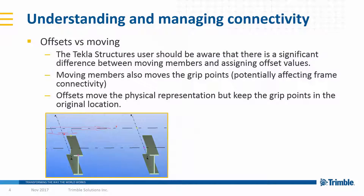When generating an analytically connected model, the Tekla Structures user should be aware of the significant difference between physically moving members to obtain the correct physical location versus assigning an offset value to obtain the correct position. Moving members also moves the grip points of the part, which can potentially affect the connectivity of the structure once transferred into Tekla Structural Designer. Offset values move the physical representation of the part but leave the grip points in the original location, making this the better method for a model that is both physically and analytically correct.